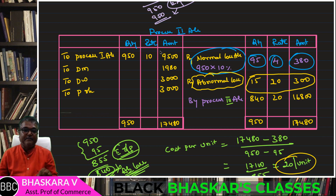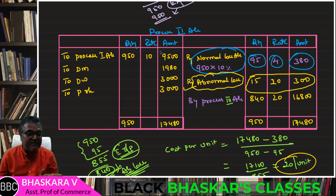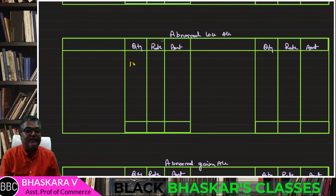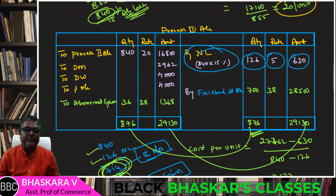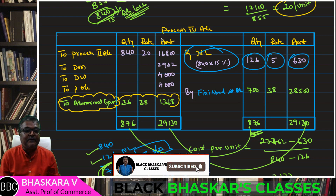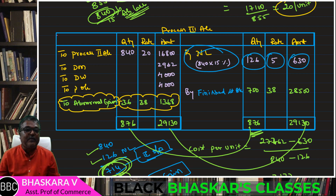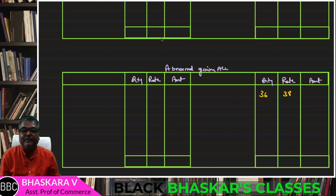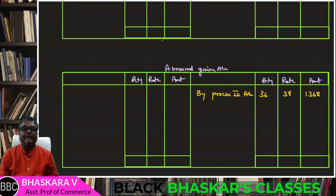Abnormal Loss Account — debit side. Process Account entries go to the credit side of the Abnormal Loss Account. Debit side of Abnormal Loss Account: Process 2 Account entry — 5, 23. Then for the second process and third process entries are also completed. Abnormal Gain Account: 36, 38, 1368 — debit side of Abnormal Gain Account, credit side 36, 38, 1368. By Process 3 Account — 1368.